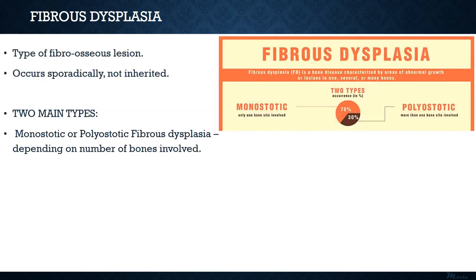Beginning with fibrous dysplasia, it is one of the common types of fibro-osseous lesion. It should be understood that fibrous dysplasia occurs sporadically and is not inherited; however, certain severe forms may be inherited and genetic in nature. Fibrous dysplasia can be broadly categorized into monostotic and polyostotic subtypes, based on the number of bones involved.